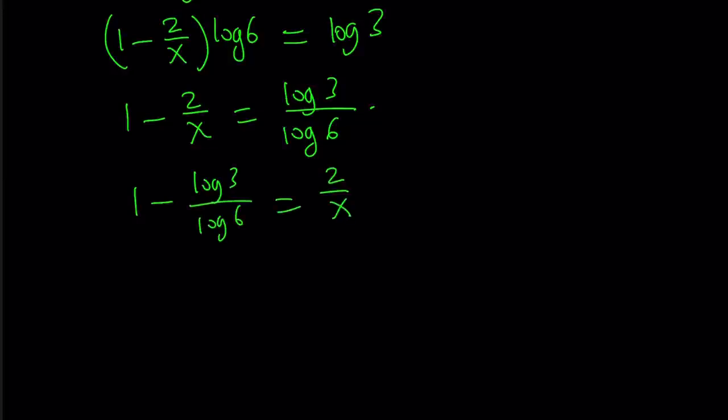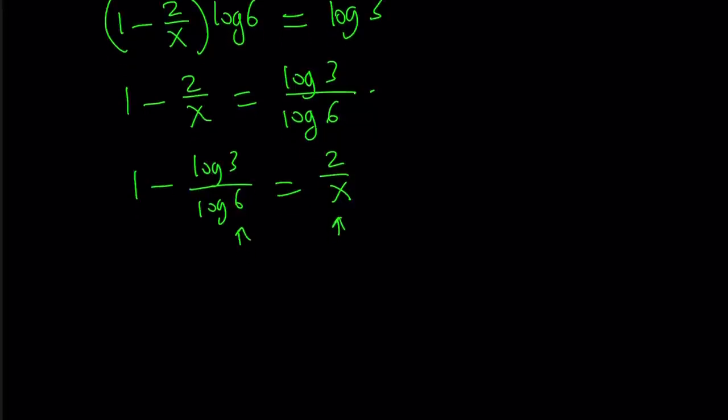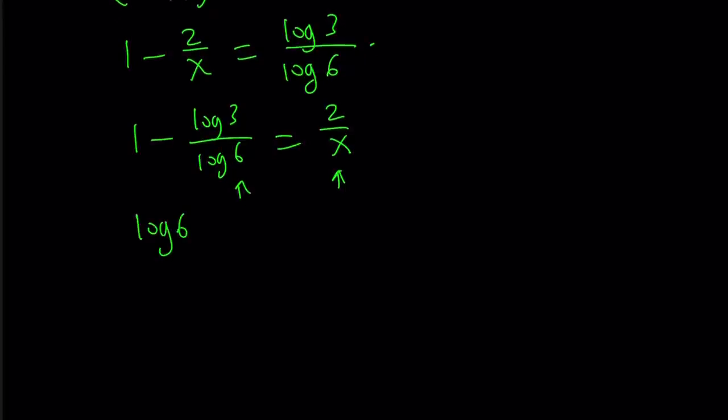In other words, the sum of these two terms is equal to 1. Make sense? Now, we can make a common denominator on the left-hand side. Log 6 minus log 3 over log 6 equals 2 over x.